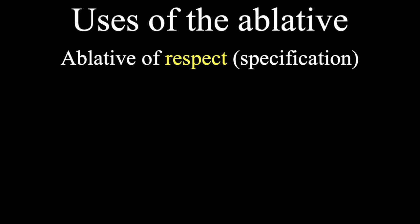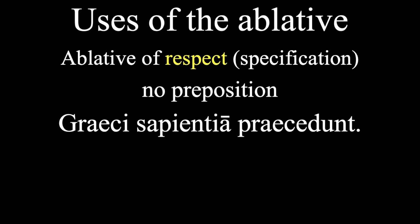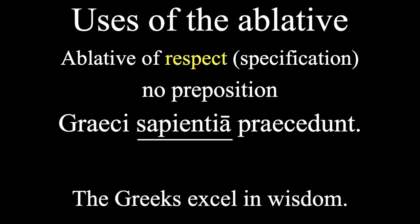Next one is the ablative of respect, also referred to as the ablative of specification. Same thing. It tells us about someone or something's characteristics. No preposition, and we usually add the word in, so we can get something like this. Grekki sapientia praiketunt. Our ablative is over here. Praiketunt is a form of the verb praiketere, which means to excel. So, this means, the Greeks excel in wisdom.